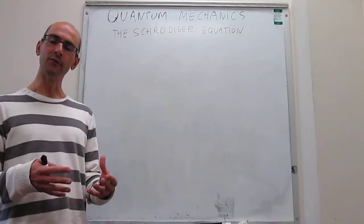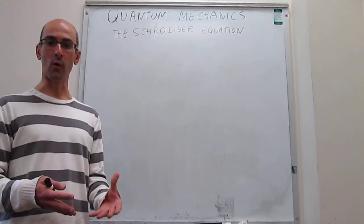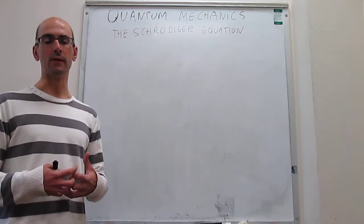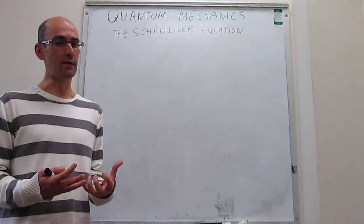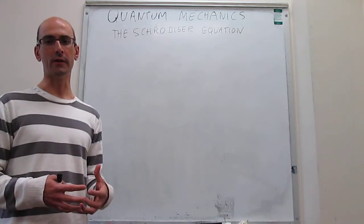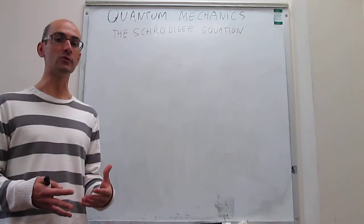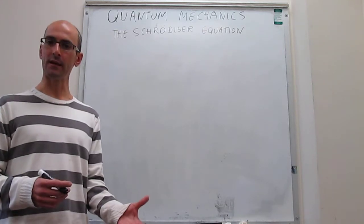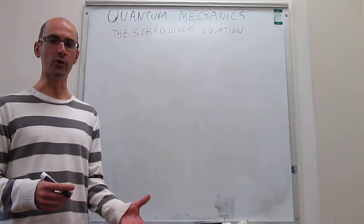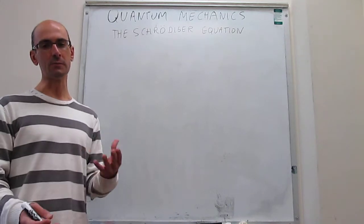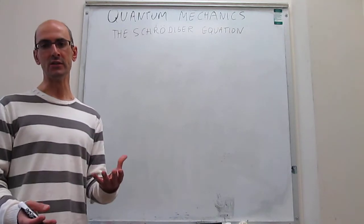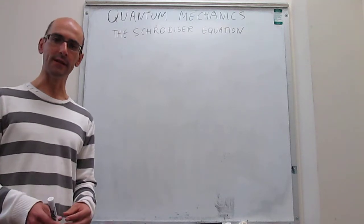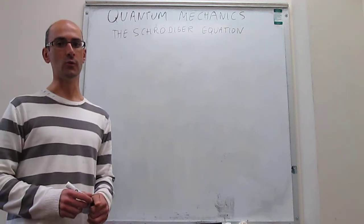The problem is that we have these very small particles that exhibit quantum behavior — for example, they can diffract. The question is: how can we understand those particles? What type of equation can we use to model their behavior? Classical mechanics is not going to work anymore because these particles behave like waves. There is this duality between wave and particle, and that's something classical mechanics fails to account for.